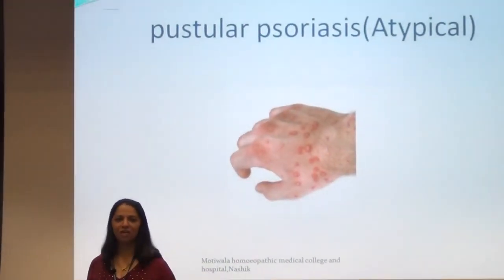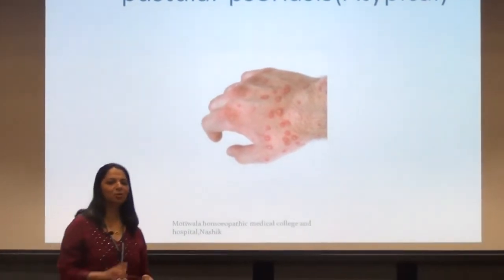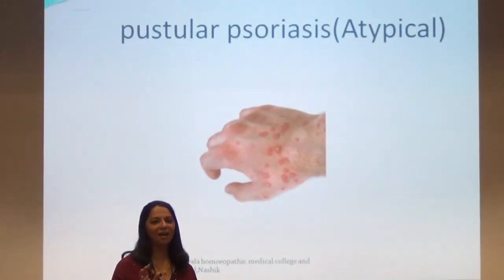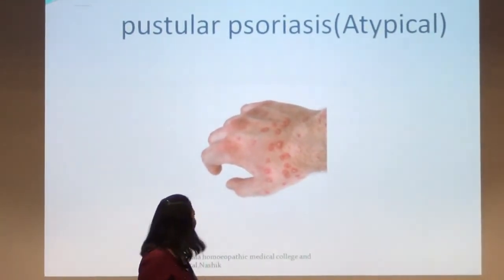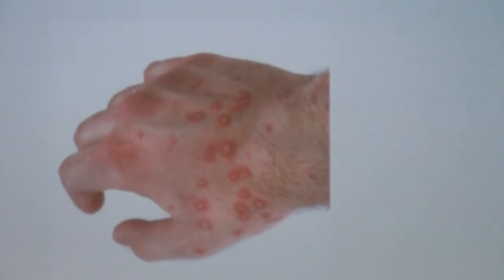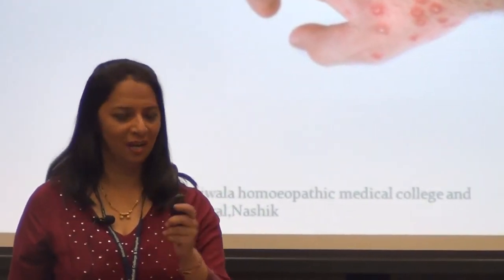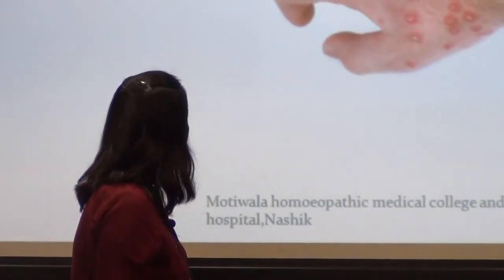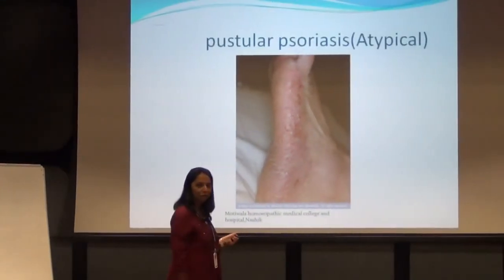This is pustular psoriasis, another variant. Unlike the typical dry papulosquamous eruptions of psoriasis, here you can see pustules. This is again an atypical form of psoriasis. Please remember psoriasis can present this way, though prevalence is much less. This picture shows pustular psoriasis affecting the feet.